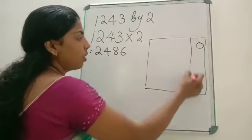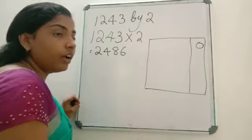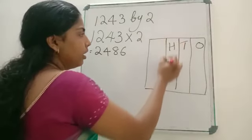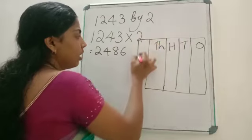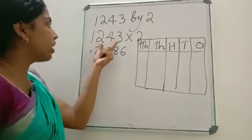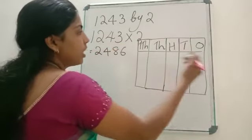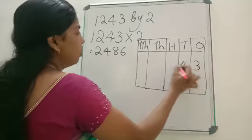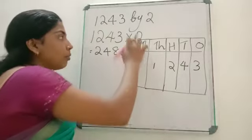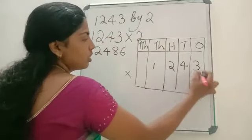Here it is a 4-digit number, so either we can draw up to 4 columns or up to 5 columns. If there is any carryover, we need one more place. So: ones, tens, hundreds, thousands, ten-thousands. Now just write these numbers according to the place value, starting from the ones place. 1,243 — start writing from the ones place: 3, 4, 2, 1. The number we are multiplying by is 2, which also starts writing from the 1's place.